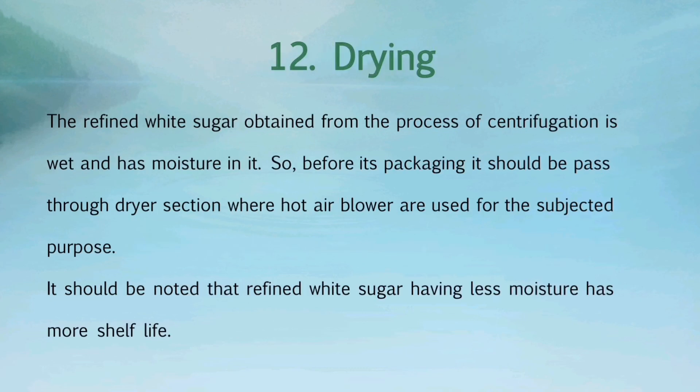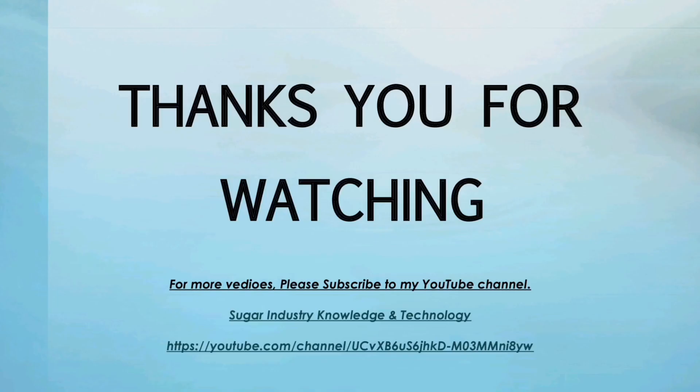The last major process used is drying. The refined white sugar obtained from the process of centrifugation is wet and has moisture in it. So, before its packaging, it should be passed through the dryer section where hot air blowers are used for this purpose. It should be noted that refined white sugar having less moisture has a longer shelf life. After that, the refined white sugar is packed and stored in godowns.